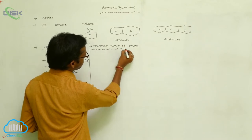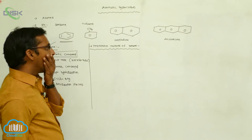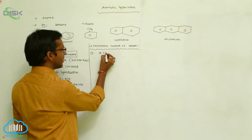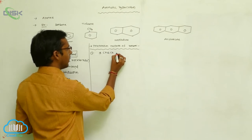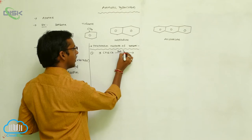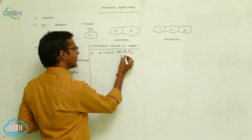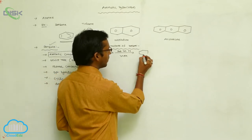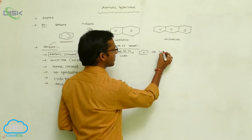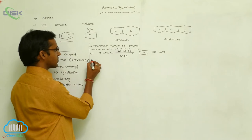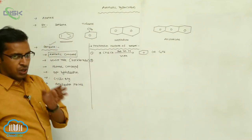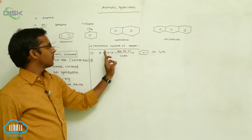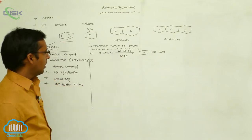Preparation methods of benzene. At 773 Kelvin temperature, benzene is produced. The molecular formula of benzene is C6H6. This is the cyclic polymerization process — during the cyclic polymerization process, benzene is formed from acetylene under red-hot conditions.